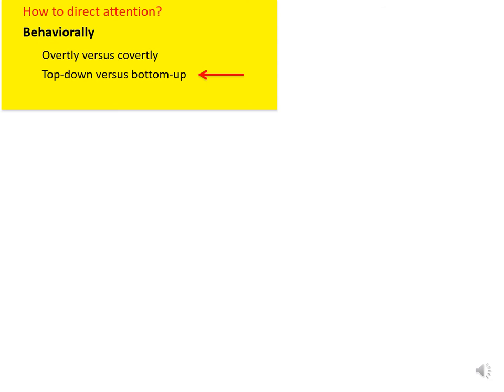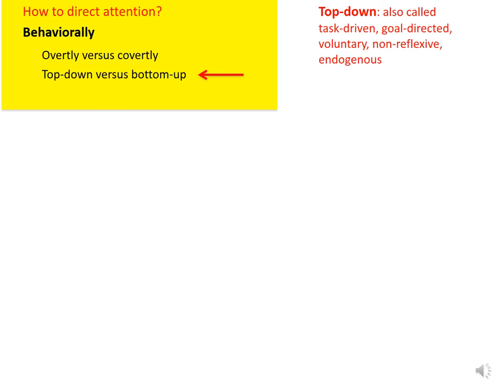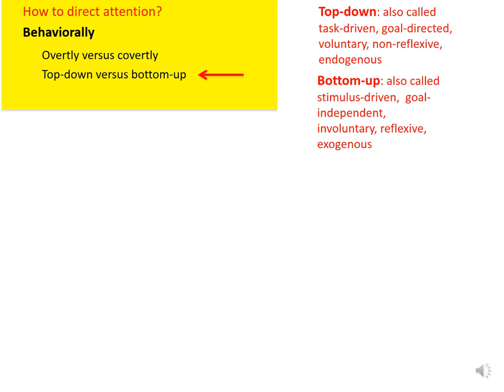In terms of the factors driving selection, we have top-down and bottom-up factors. Top-down is also called task-driven, goal-directed, voluntary, non-reflexive, and endogenous. For example, your gaze may be directed to these words because your goal is to listen to this lecture. Bottom-up selection is also called stimulus-driven, goal-independent, involuntary, reflexive, and exogenous. For example, even though your goal is to listen to this lecture, your gaze can be automatically captured by your dog if it suddenly jumps at you from the side — the dog is an external stimulus attracting attention in a bottom-up manner.